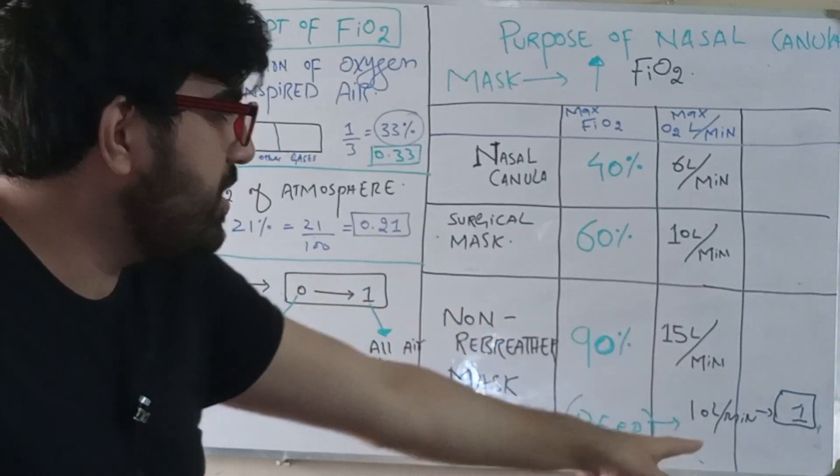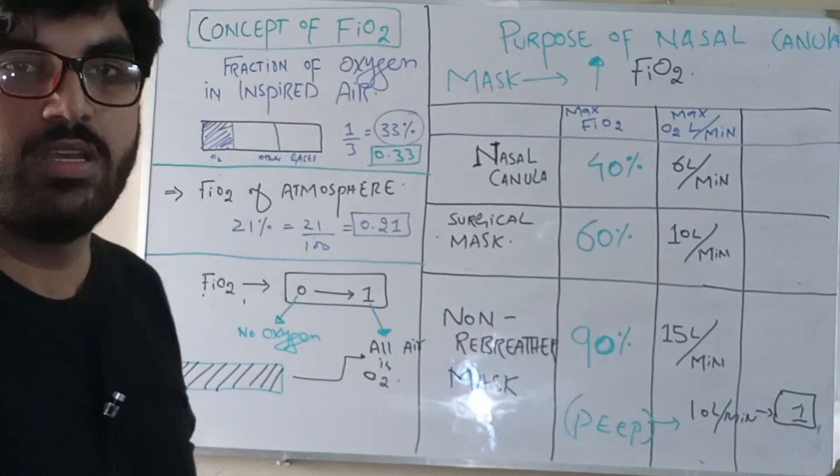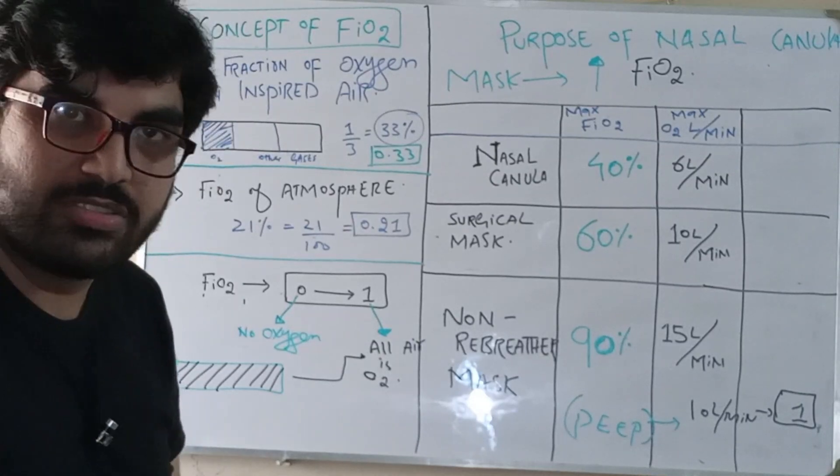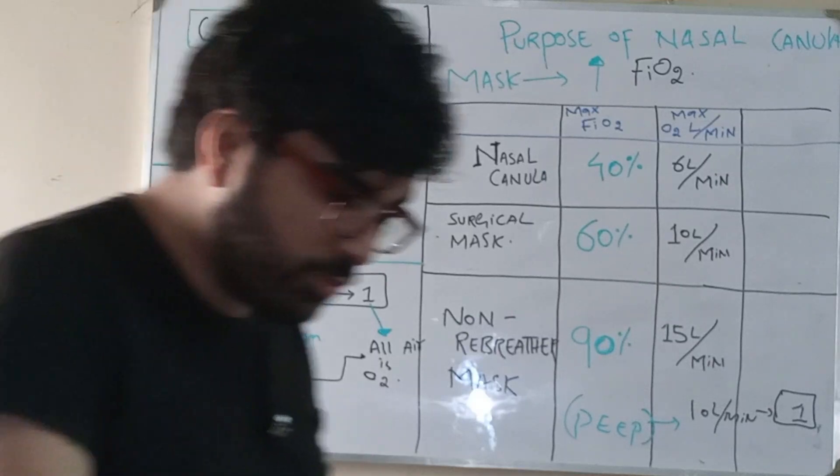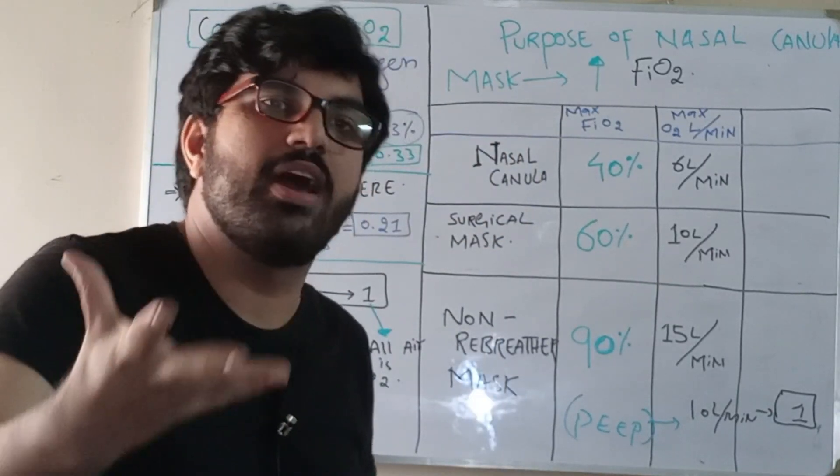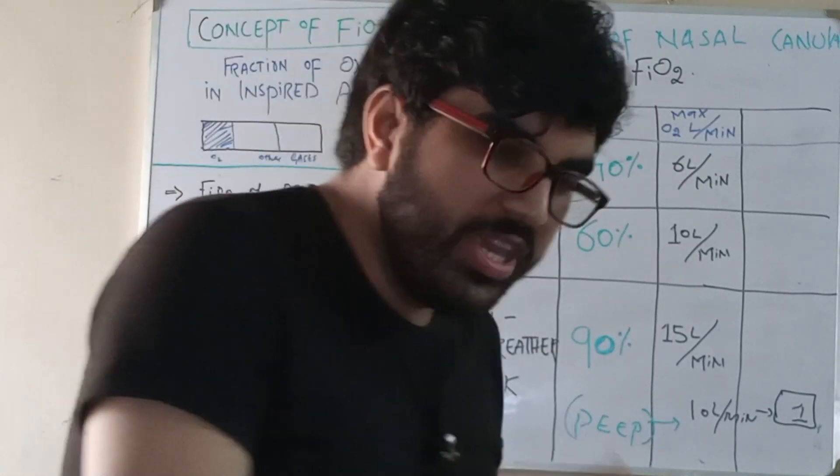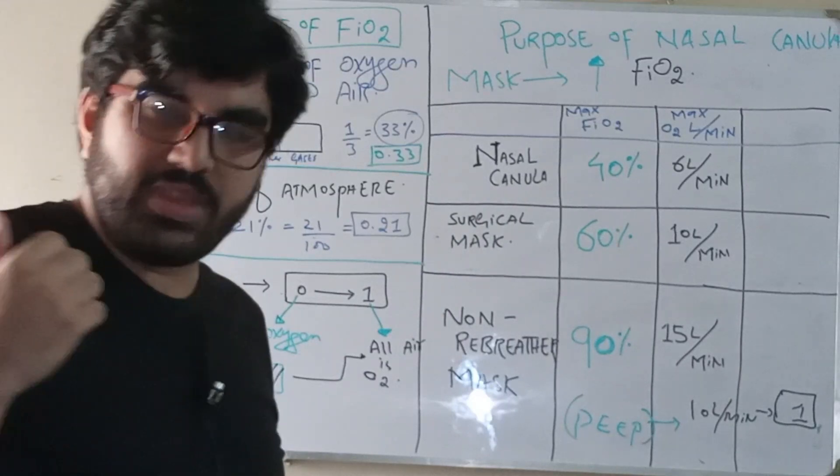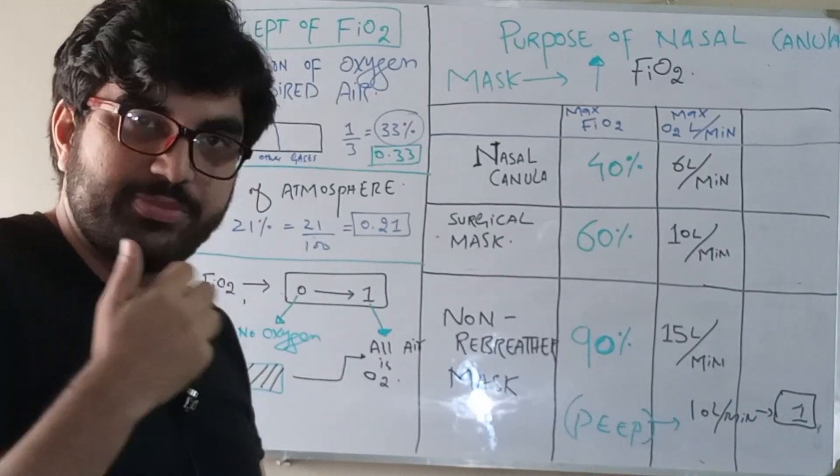But unfortunately we cannot increase the PEEP with this, because if we are giving 15 liters, we can only increase the PEEP by 1.5 or 2. What are the benefits of PEEP - positive end expiratory pressure? Point number one: it opens the alveoli. If it opens the alveoli, it improves V/Q mismatch.